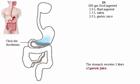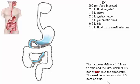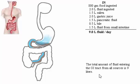Click the duodenum. The pancreas delivers 1.5 liters of fluid and the liver delivers half a liter of bile into the duodenum. The small intestine secretes 1.5 liters of fluid. The total amount of fluid entering the GI tract from all sources is 9 liters.